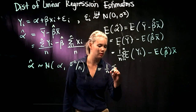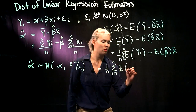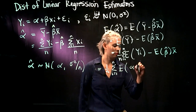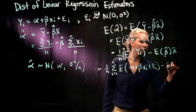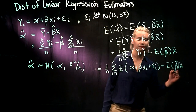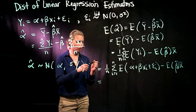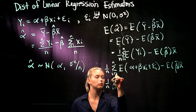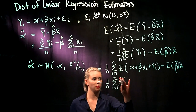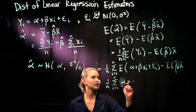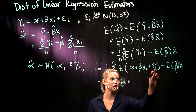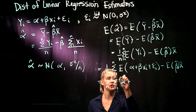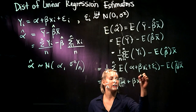So we have 1 over n times the sum of all those expectations. Well, y_i is equal to alpha plus beta x_i plus epsilon_i. Using linearity of expectation: alpha is a constant, we can pull it out. Beta is a constant, we can pull that out. x_i is a constant, we can pull that out. And epsilon_i has expectation zero, so we just end up with alpha plus beta x_i plus zero.